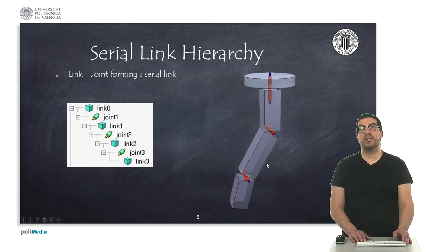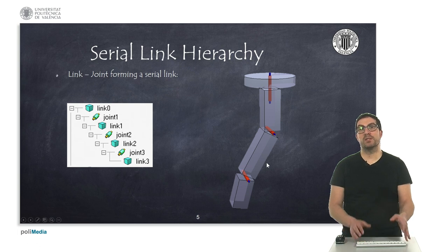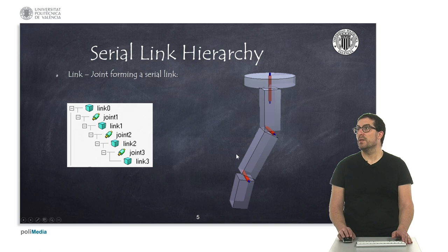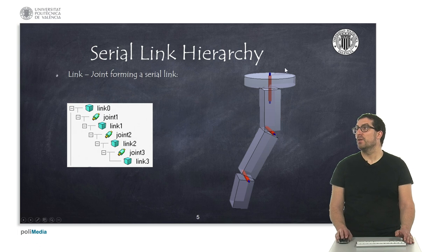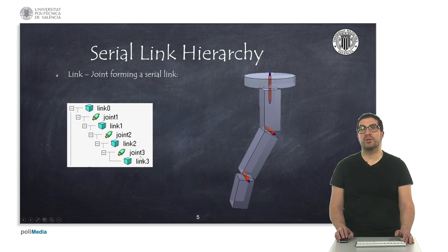Now we're going to study the hierarchy between links and joints. In the case of robot arms, we have a serial link structure, so that the first link is the base of the robot and usually is the fixed link — this one here — and corresponds to this object here. Then we find a set of joints and links in a chain structure. Each joint moves the next link of the chain. For instance, this joint here moves this link here, and this joint here moves this link here, as seen in this hierarchical structure.